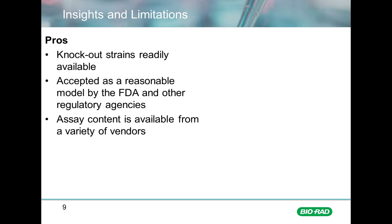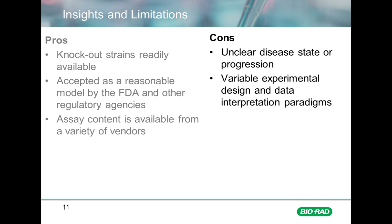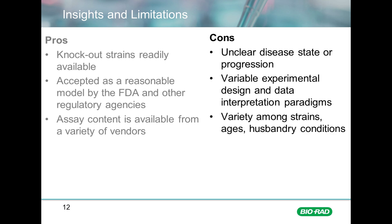A lot of development has been made in the area of assays for determining the response of a mouse model to a disease state or a treatment, so there's quite a wide range of assay content available to interrogate mouse models. On the other hand, there are some important limitations to keep in mind. In some cases, the disease state or progression can be unclear in the mouse model, particularly in the early stages of disease — which is often the most important point to measure. It's also critical to maintain consistency in experimental design and data interpretation for the data to be useful.